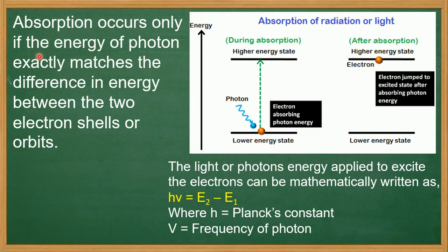Absorption occurs only when the energy of the photon exactly matches the difference in energy between the two electron shells or levels. Here are two energy levels — the difference in energy between them must equal the energy of the incident photon for the electron to jump to the excited state. This is all about the absorption event.